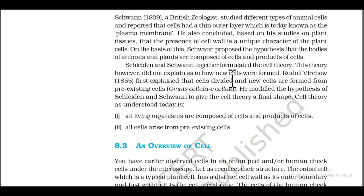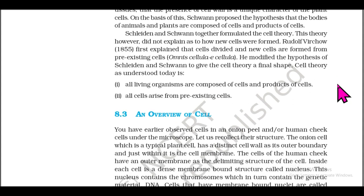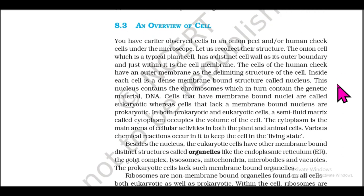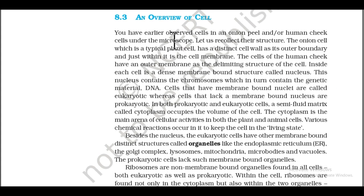Rudolf Virchow (1855) first explained that cells divide and new cells are formed from pre-existing cells — 'Omnis cellula e cellula.' He modified the hypothesis of Schleiden and Schwann to give the cell theory its final shape. Cell theory as understood today: first, all living organisms are composed of cells and products of cells; second, all cells arise from pre-existing cells.